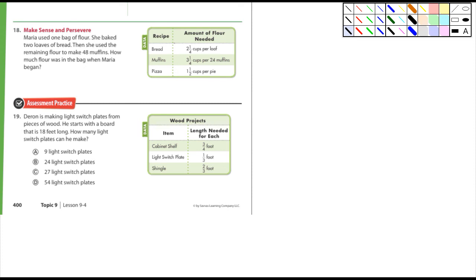And then finally, number 19. He starts with a light board 18. How many switch plates can he make? So he starts with a board that's 18 feet long, and we're talking about switch plates right here. Each switch plate is one third of a foot. So what are we talking about here? We're talking about 18 divided by one third.